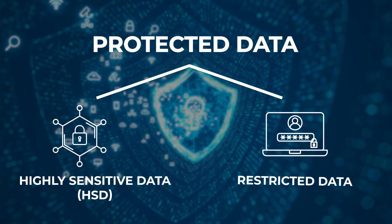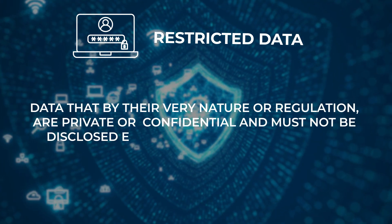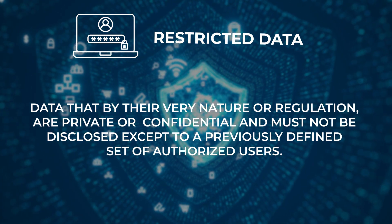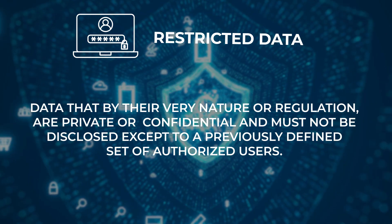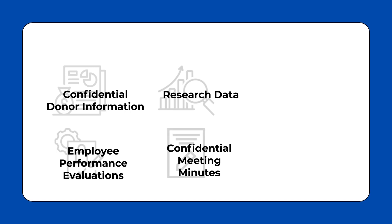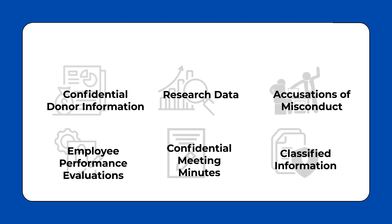Restricted data, by its very nature or regulation, are private or confidential and must not be disclosed except to a previously defined set of authorized users. Examples include confidential donor information, employee performance evaluations, some research data, minutes from confidential meetings, accusations of misconduct, and any other information that has been identified by the university, its contractors or funding agencies, or federal or state regulations as private or confidential and not to be disclosed.